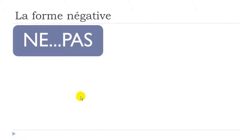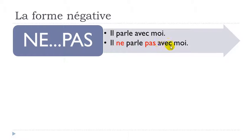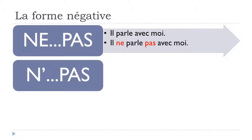Let's see a few examples with 'ne...pas'. Take the sentence 'il parle avec moi'. To make it negative, first put 'ne' before the verb, then your verb 'parle' unchanged, then the second part 'pas'. You get: 'il ne parle pas avec moi'. That's your negative sentence.